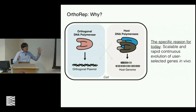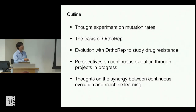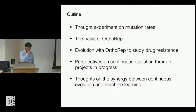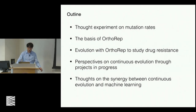The structure of the talk: I'll start with a thought experiment on mutation rates and show the molecular and genetic basis of OrthoREP. I'll show an example we've used OrthoREP for in studying drug resistance. I'll give some perspectives on continuous evolution, touching on points we just heard about through some projects we have in progress. And I'll give some thoughts on the synergy between continuous evolution and machine learning — though in full disclosure, I don't know anything about machine learning. So during this part, I'm going to just look at Debbie Marx, and if she's nodding, I'll continue; if she shakes her head, I'll say the opposite.